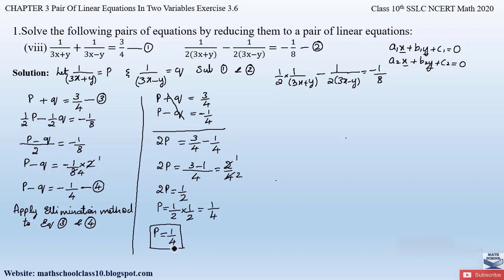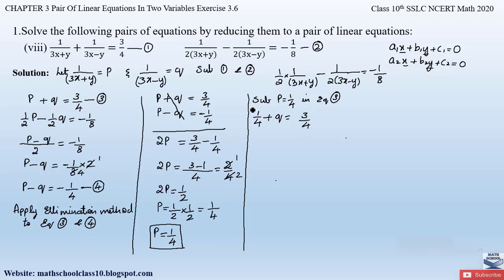Now substitute p = 1/4 into equation 3. Equation 3 is p + q = 3/4, so 1/4 + q = 3/4. Sending 1/4 to the right-hand side: q = 3/4 − 1/4. The denominators are the same, so q = 2/4 = 1/2. Therefore q = 1/2.